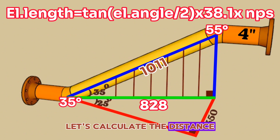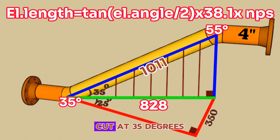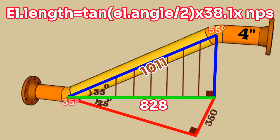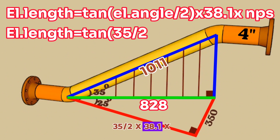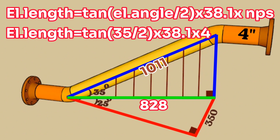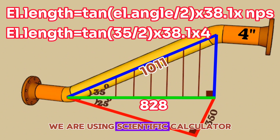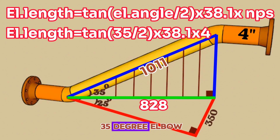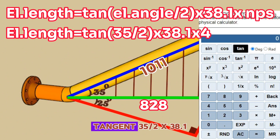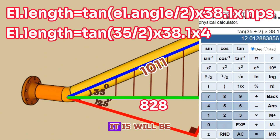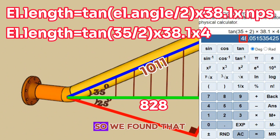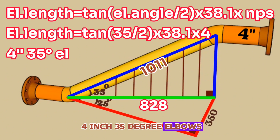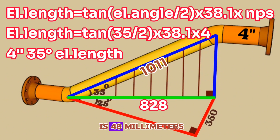Let's calculate the distance from center to end of the 4-inch elbow cut at 35 degrees. Elbow length equals tangent(35/2) × 38.1 × 4 inch. Using a scientific calculator: tangent(35/2) × 38.1 × 4 = 48 millimeters. So we found that the 4-inch 35-degree elbow's center-to-end dimension is 48 millimeters.